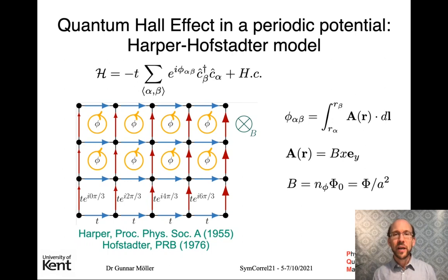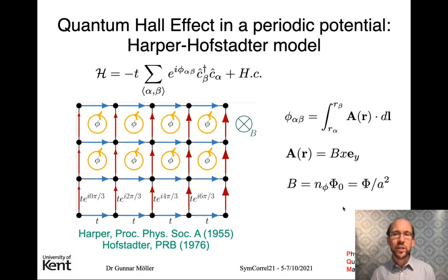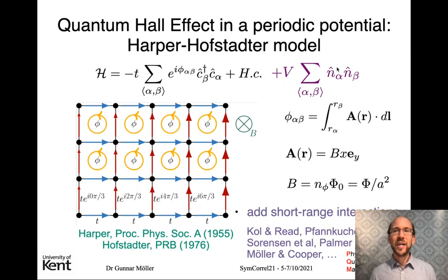Today I want to talk about a very different plateau transition which is based on a clean model where there's no disorder, however we do need a periodic potential. The fractional quantum Hall effect in a periodic potential is often described in this tight-binding model named after Harper and Hofstadter — Harper who first introduced it in the 1950s and Hofstadter who later solved it numerically. The model is given by a simple tight-binding Hamiltonian with minimal coupling to a gauge field, reflected by complex phases e to the i phi_alpha_beta given by the integral over the vector potential, which we can represent in Landau gauge. The important parameter is the flux density, which is the magnetic flux per plaquette of the system. We'll then be adding interactions to this model and considering the resulting many-body problem.